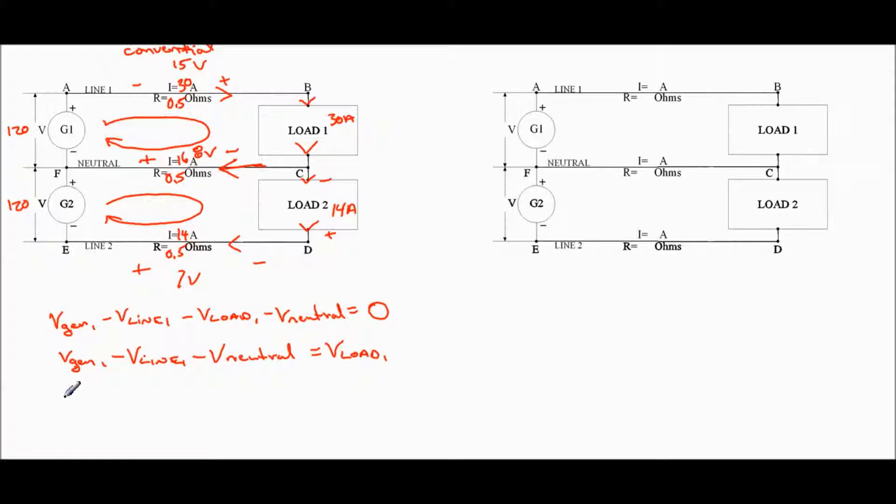Right? So I can write V load 1 equals the generator, 120 volts, minus V line 1, which is 15 volts, minus the voltage at the neutral, which was 8 volts. And so V load 1 is going to equal 97 volts.